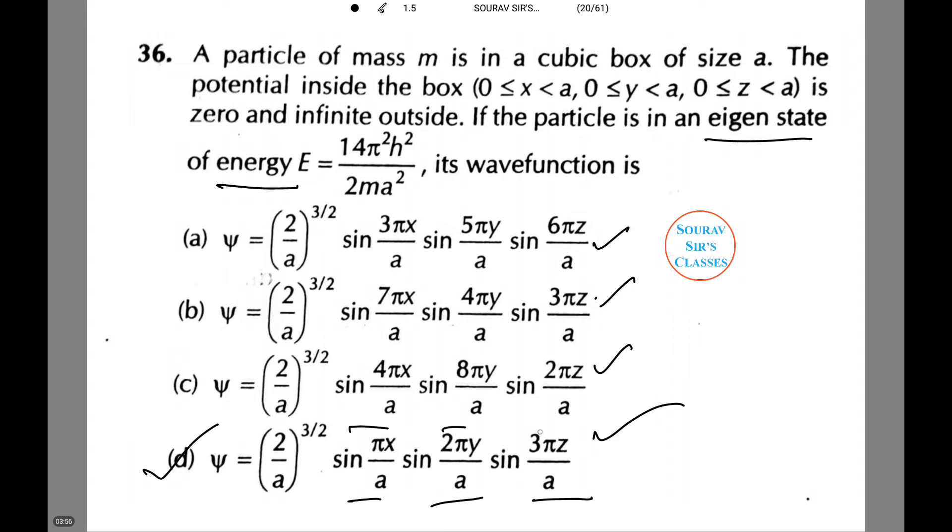In other cases, there are 4, 8, and 2; 7, 4, and 3; 3, 5, and 6, which do not satisfy nx² + ny² + nz² equals 14. Hence, option D is the correct answer.